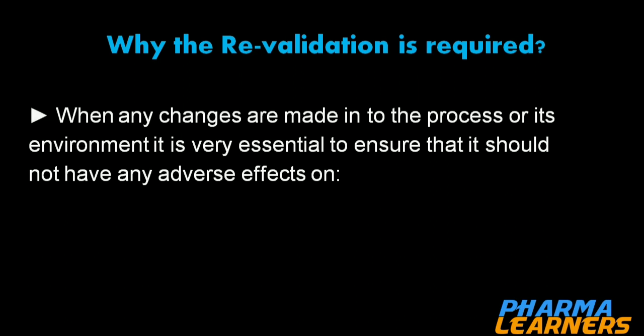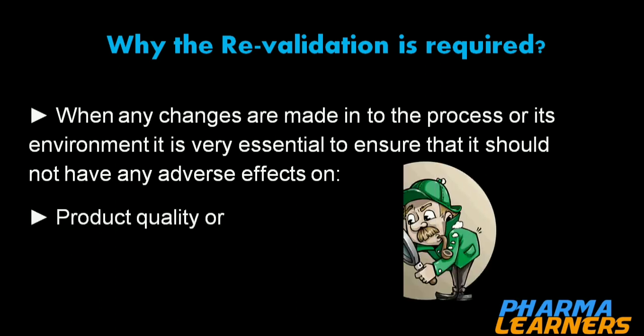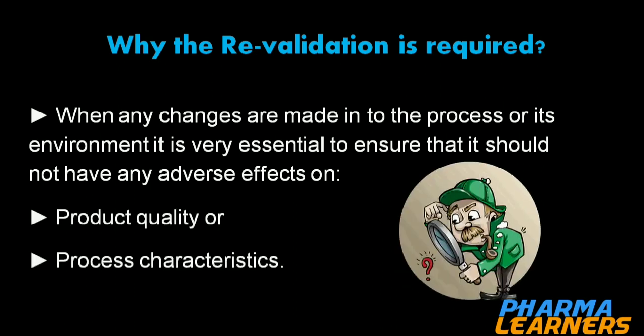When any change is made in the process or its environment, it is essential to ensure it does not have any adverse impact on product quality or process characteristics. There can be a number of changes in the manufacturing process or any standard operating procedure that may impact product quality, and here are a few examples.